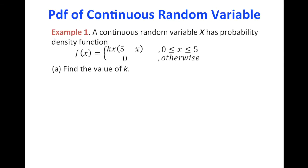Let's look at example number one. A continuous random variable X has probability density function f(x) = Kx(5 − x) for 0 ≤ x ≤ 5, and f(x) = 0 otherwise. Meaning if X is beyond this interval, the probability is zero. This is what we call a piecewise function.